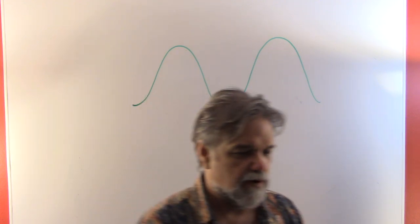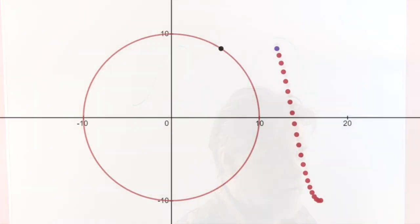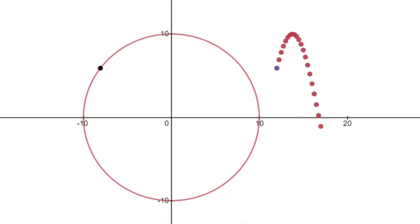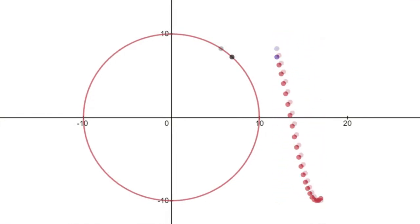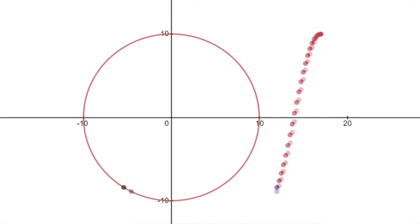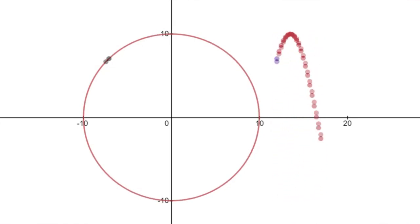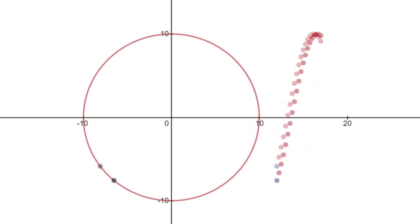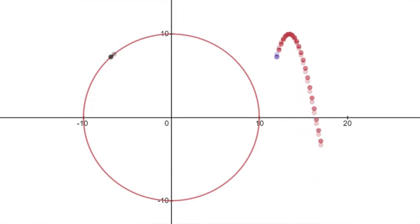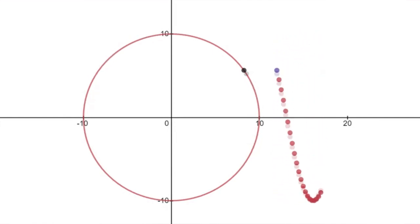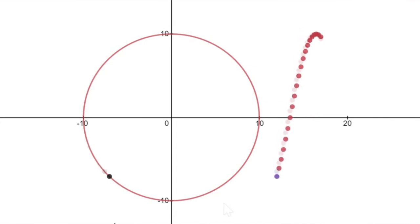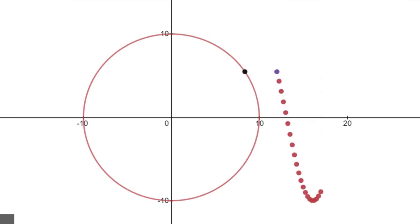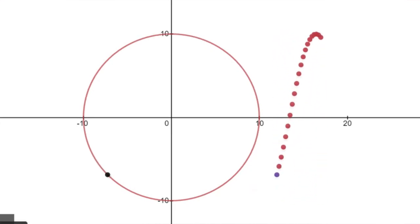Here's an example of simple harmonic motion. We see a circle with a point going around it, and next to the circle there's a ball with trails behind it bouncing up and down — kind of mesmerizing. That ball on the right is a good example of simple harmonic motion: something going up and down making a smooth movement.